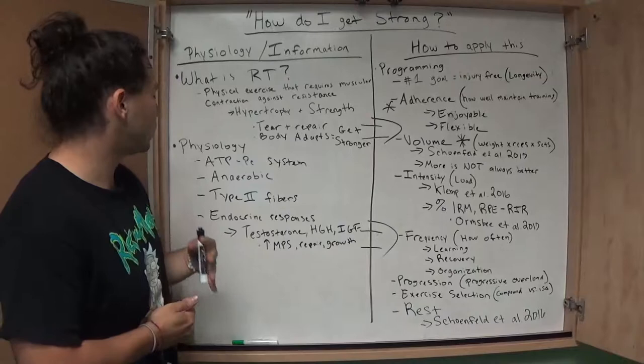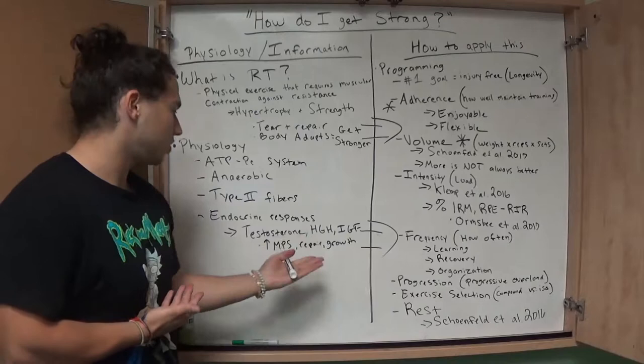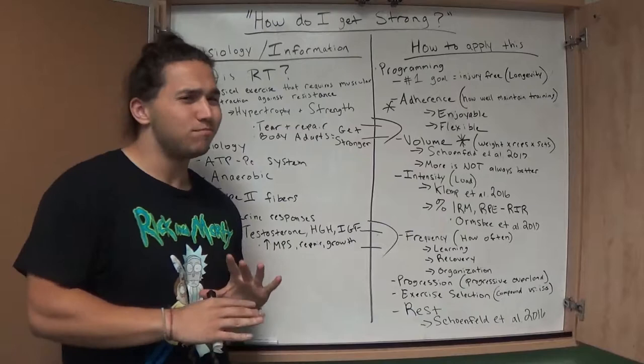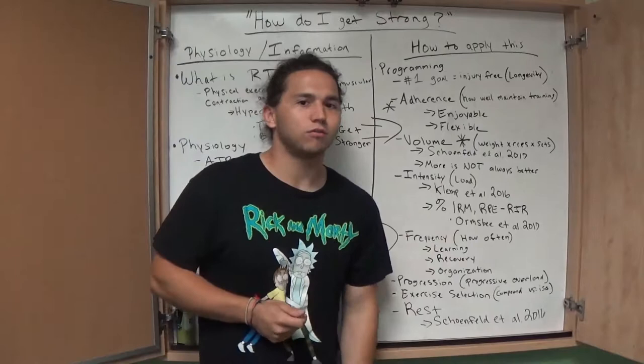When you're in resistance training, you also elicit many endocrine responses, releasing many hormones, but for the purpose of this, we're going to stick with the main three that are important to resistance training and strength, which are testosterone, human growth hormone, insulin-like growth factor, and what these do, these increase muscle protein synthesis, which leads to muscular repair and muscular growth. So now that we know some very basic physiology of resistance training, how can we use this to apply to our actual training, and how can we actually get stronger?